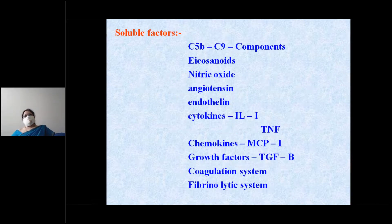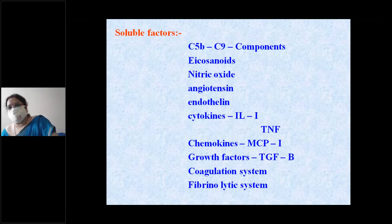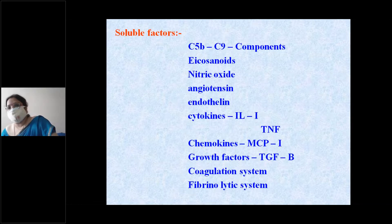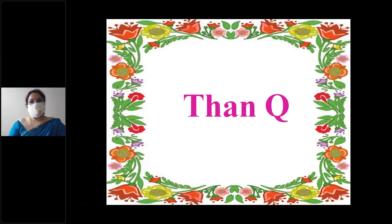Soluble factors causing glomerular injury include complement components C5b-C9, eicosanoids, nitric oxide, angiotensin, endothelins, cytokines such as IL-1 and TNF, chemokines, MCP, growth factors, and the coagulation and fibrinolytic systems.